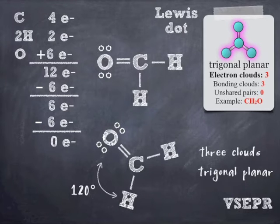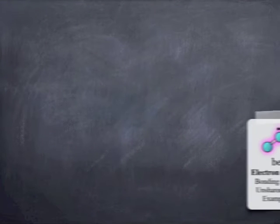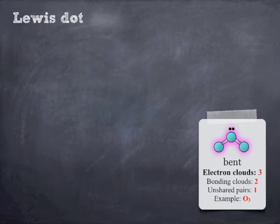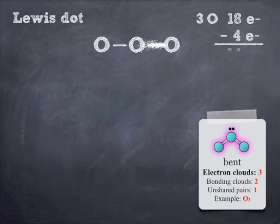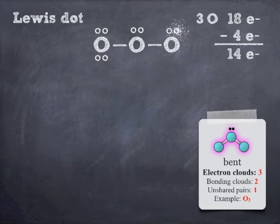And there's one more situation that we will have to run into with 3 clouds, and that's if one of these clouds is an unshared pair. And that'll happen with our friend ozone, which, again, we've talked about before. And so, I'm going to have 18 electrons with 3 oxygens. I'm going to use up 4 to make the single bond single bond. And then, again, you just sprinkle electron pairs around like a little electron pair fairy.